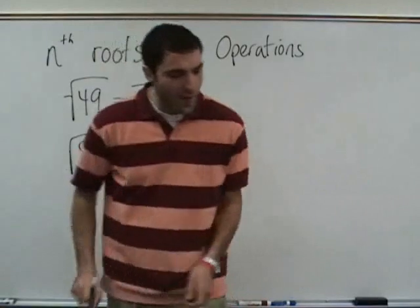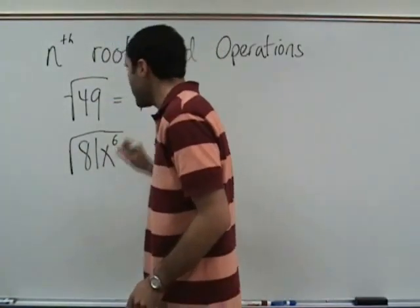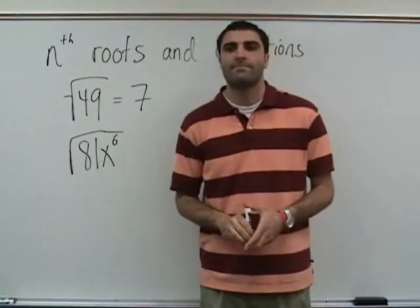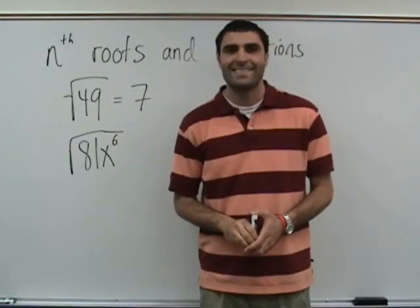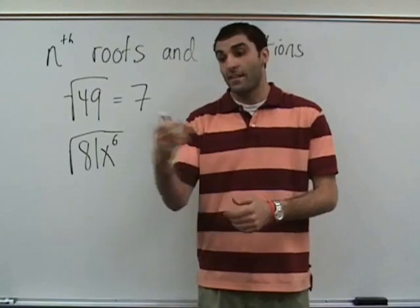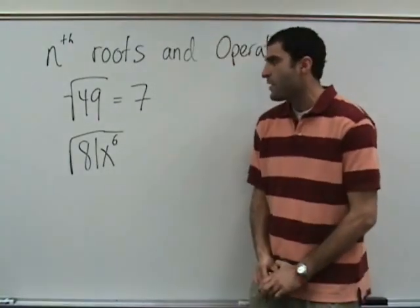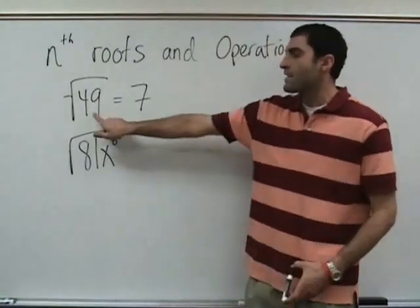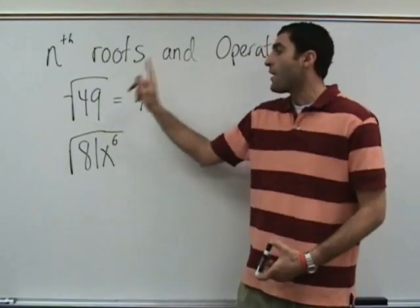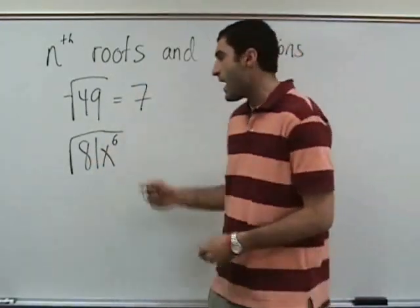Who can define in their own words what square root is? A number times itself pretty much. Good. A number times itself. So what times itself is forty-nine? Seven. What times itself is eighty-one? Nine.